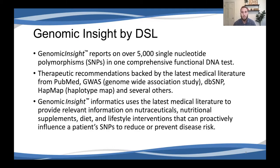Therapeutic recommendations within Opus Explorer and Genomic Insight are all backed by the latest medical literature from PubMed, GWAS, dbSNP, and many other well-respected sources in the genetics and genomics community. Genomic Insight uses the latest medical literature to provide relevant information not only on the genes themselves, but also on nutrients, supplements, diet, and lifestyle changes that patients and clients can proactively implement to reduce or prevent their risk of different diseases.